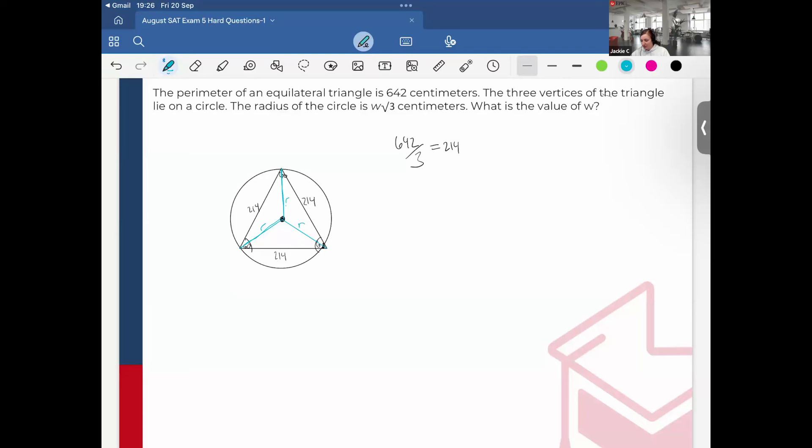Looking at this triangle, remember too when you cut an equilateral triangle in half you create two 30-60-90 triangles. So this would be 60, this would be 30, 30. We can see here that this is 30, this would be 30, that will come in handy later.